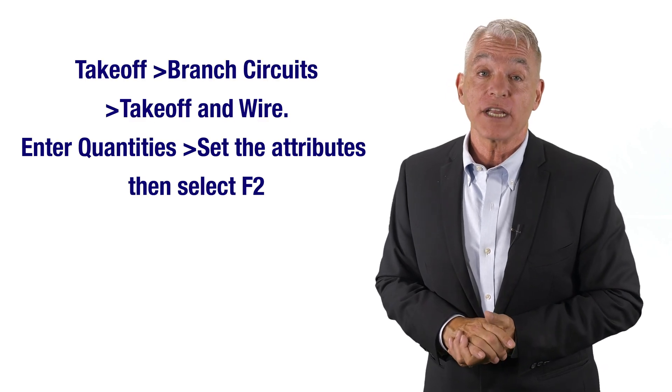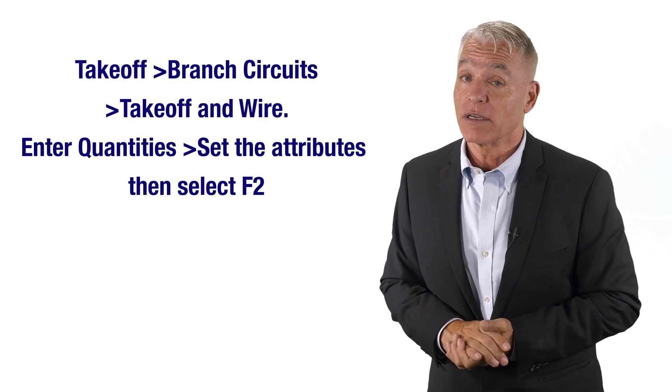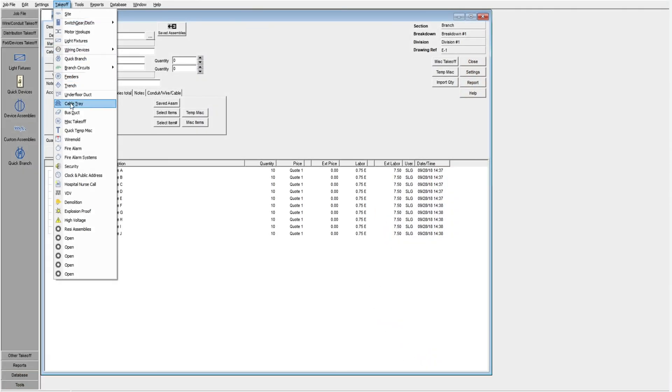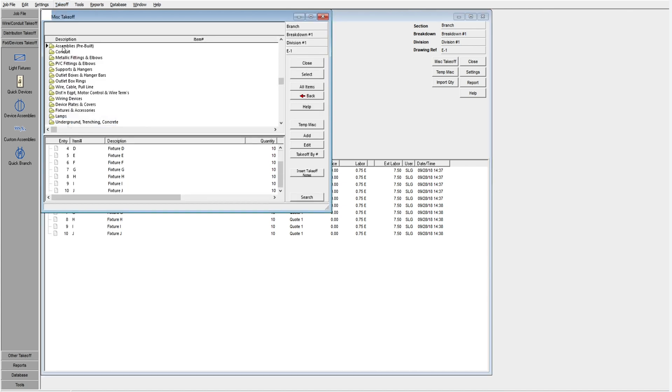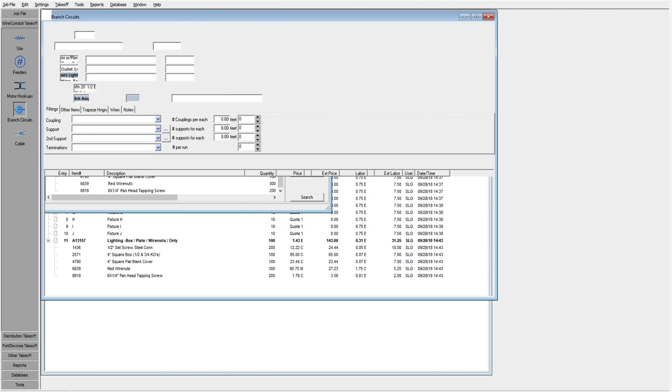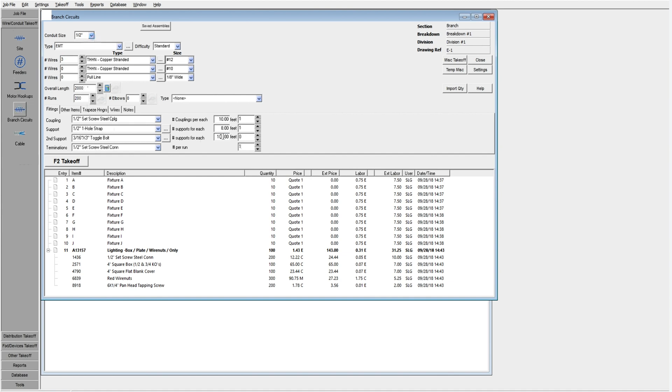Next we're also going to add 2,000 feet of half inch EMT with three number 12 THHN conductors. To add these items we must go to take off branch circuits, take off and wire, enter quantities, set the attributes then select F2. In this video I'm going to show you the steps that I use to install the items mentioned above. Scroll down and find miscellaneous takeoff. Go through the steps as we talked about earlier until you find boxes. Enter quantities then okay. Now move to wire conduit branch circuits, change the attributes. Enter quantities then select F2.